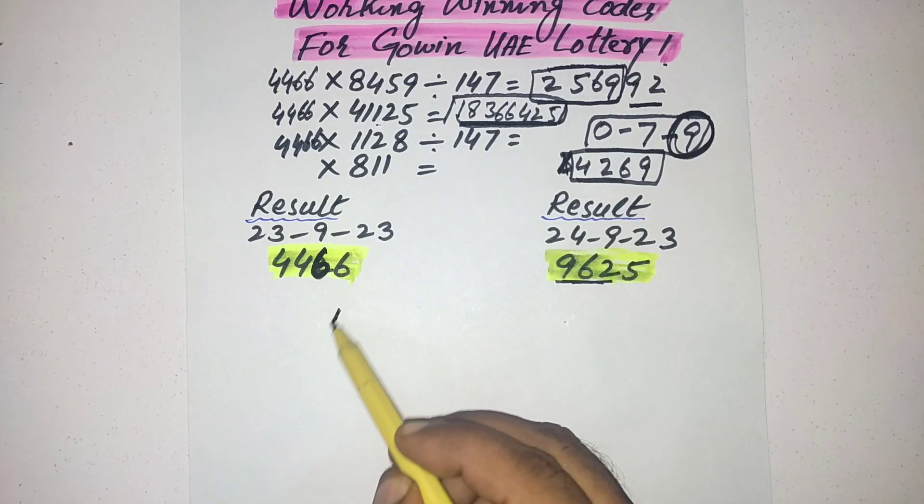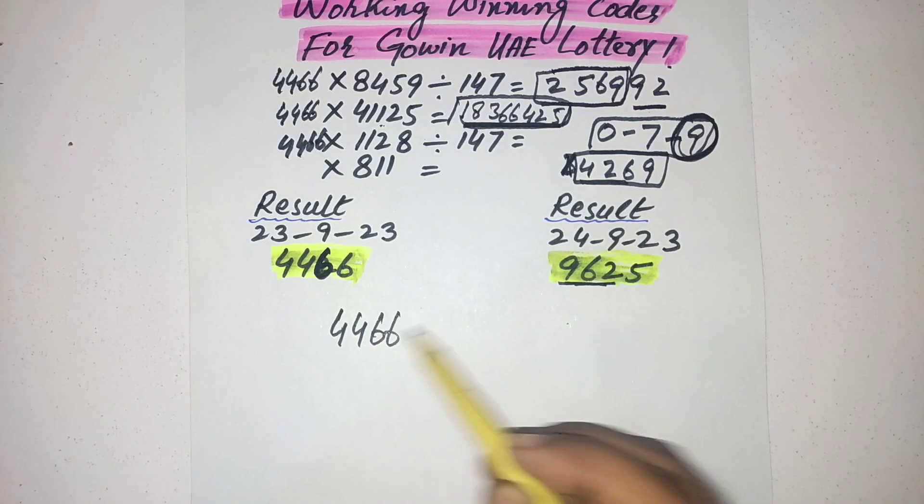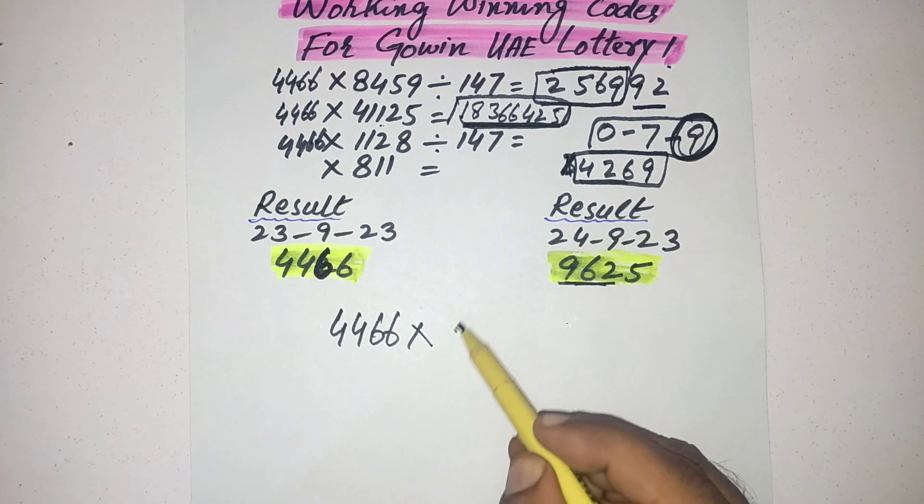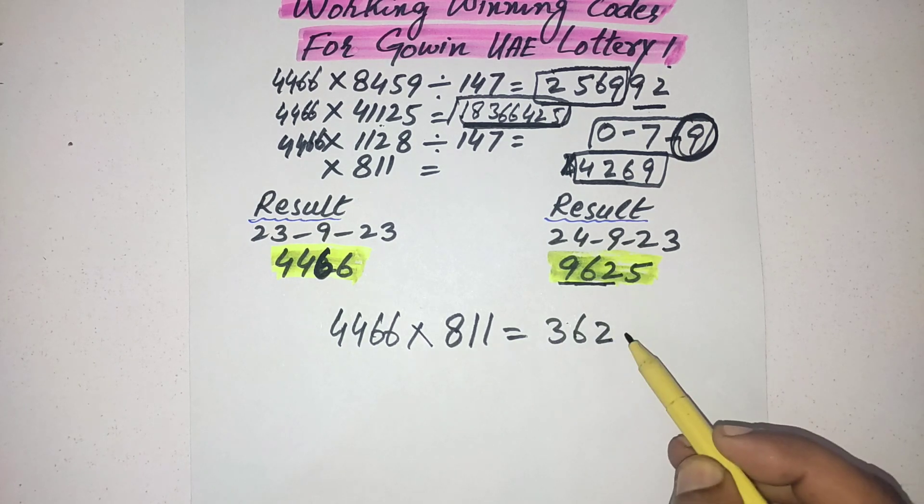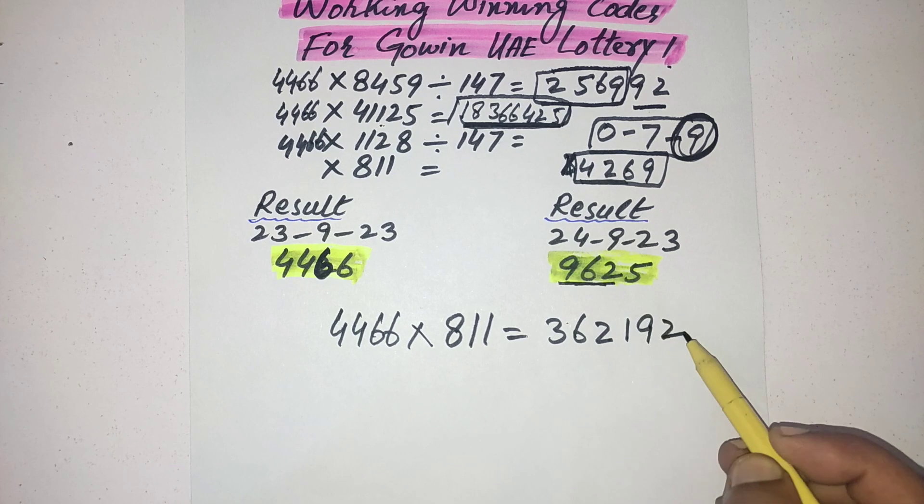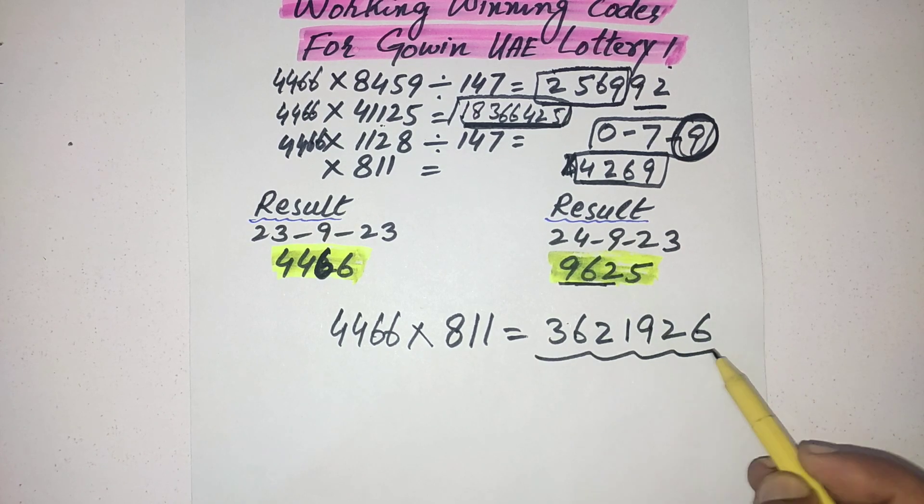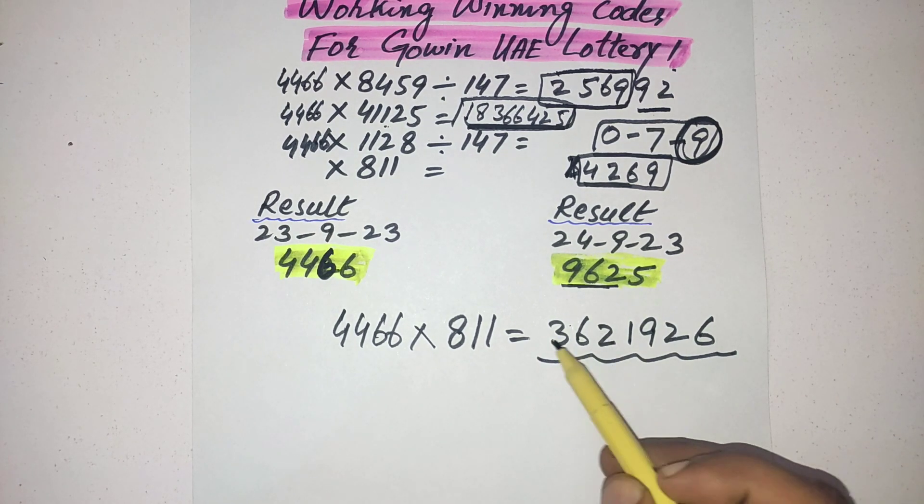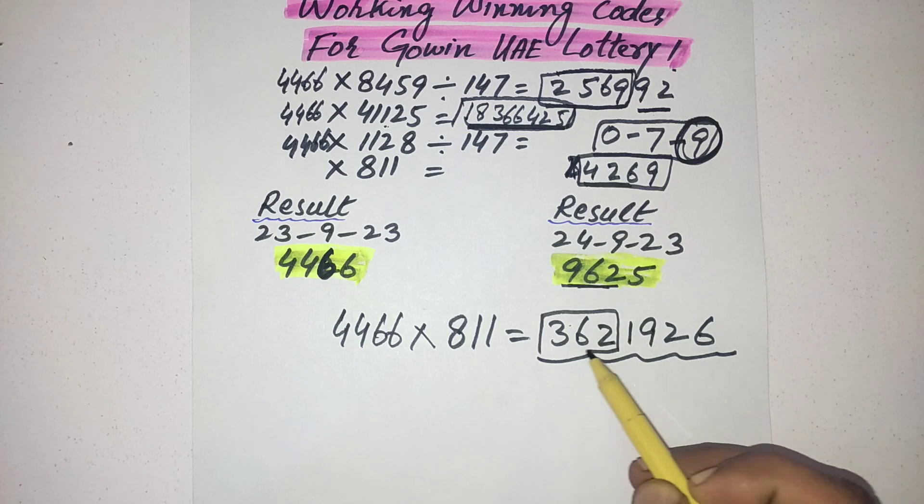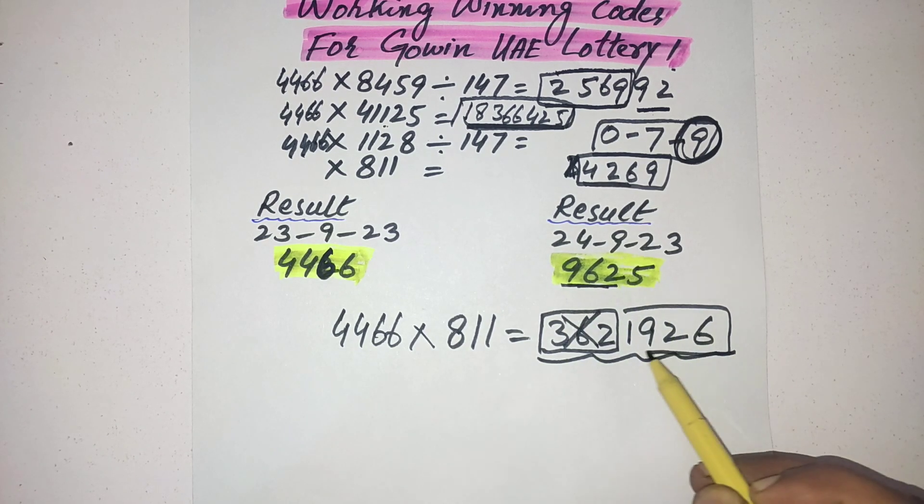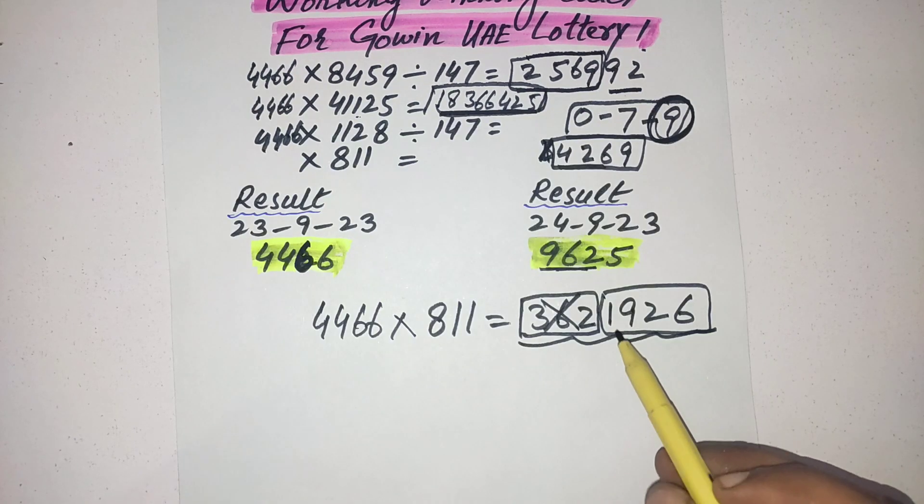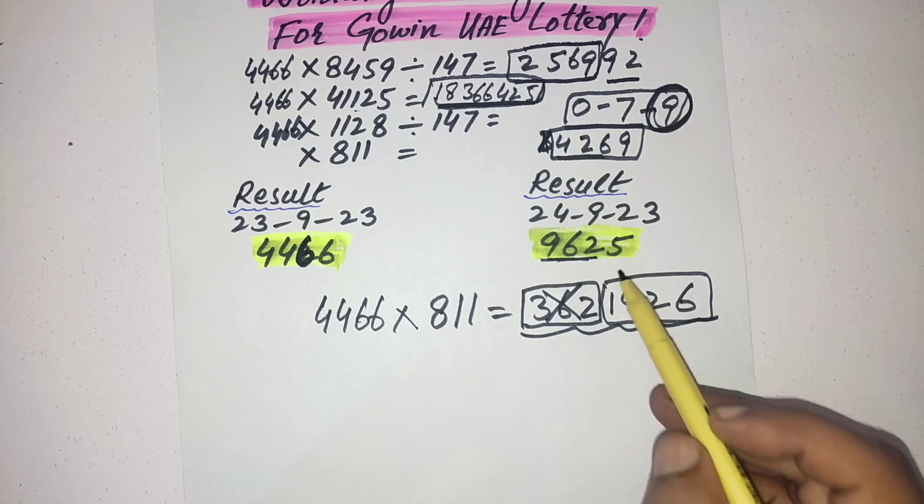Maximum time you got the exact four numbers with this formula. The last one is 811. The answer is 36621926. In this condition, you leave the first three numbers and pick the last four numbers.